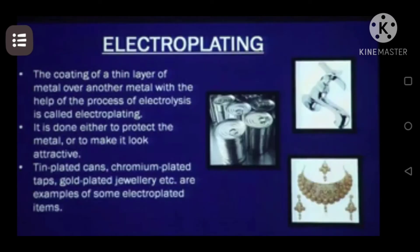We will start with electroplating. During the process of electroplating, a thin layer of metal is coated on another metal or material using electrolysis. A thin layer of a metal material is coated over another metal with the help of electrolysis. This is done either to protect the metal or to make it look attractive.